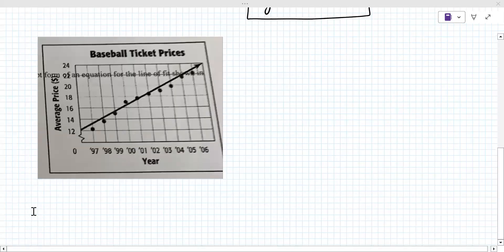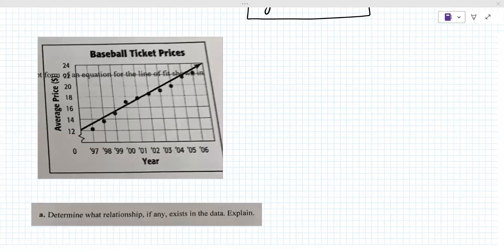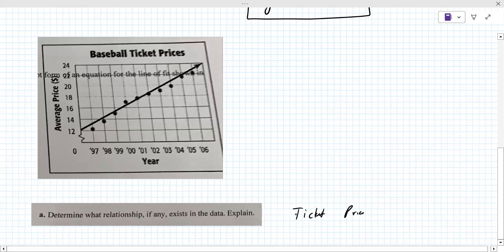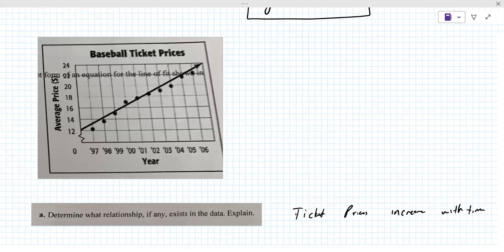Let me grab the next plot and then grab the question. The scatter plot shows the average price of a major league baseball ticket from 1997 to 2006. Determine what relationship if any exists in the data. Basically they're asking you about what does this line tell you, how would you describe this line to someone? It's going up, the ticket prices. Yeah. So you'd say ticket price increases with time.